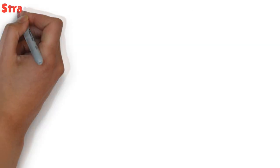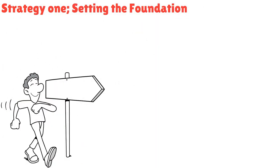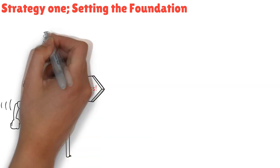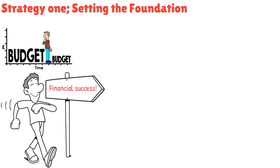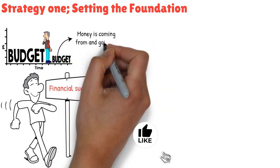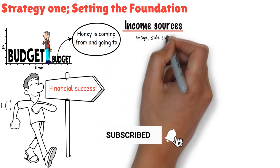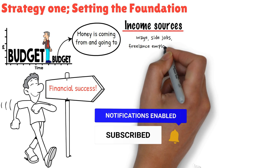Strategy one: Setting the foundation. It's time to take control and start your journey towards financial success. First and foremost, setting up a budget is similar to having a roadmap. You can tell where your money is coming from and going by doing this. List all income sources in the beginning including your wage, side jobs, and freelance employment.